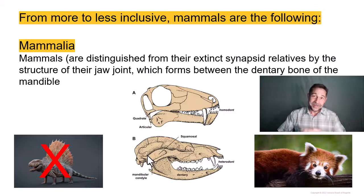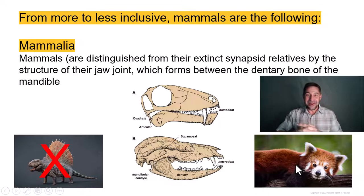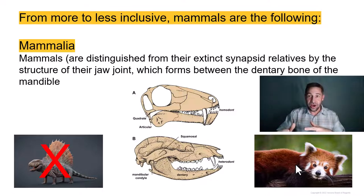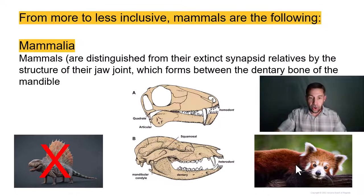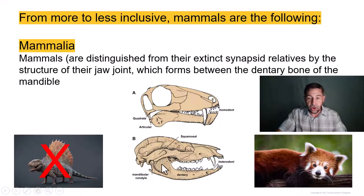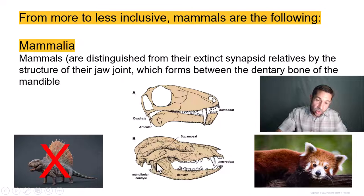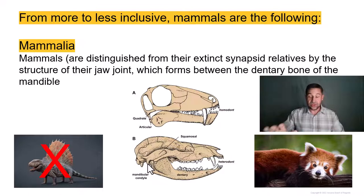This brings us to the adorable red panda here on the bottom right. Mammals are distinguished from their synapsid relatives by their large and heavy dentary bone — the lower jaw. You can see it's all one bone. The dentary bone in mammals forms a joint with the squamosal bone, and again, we'll come back to these concepts.